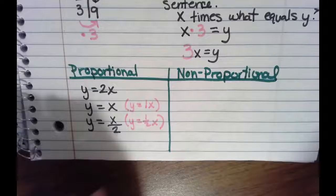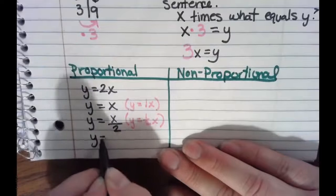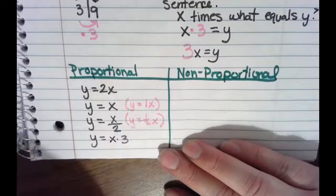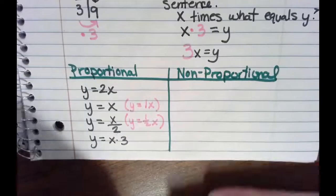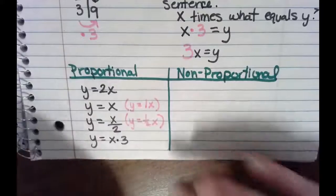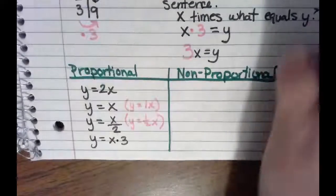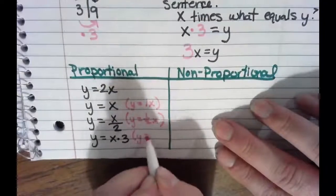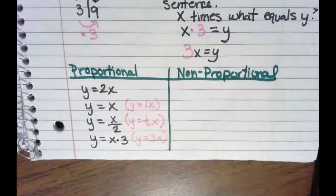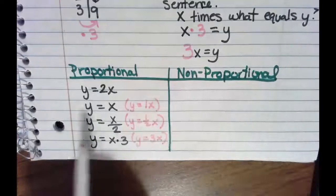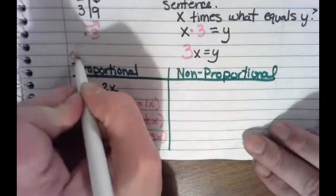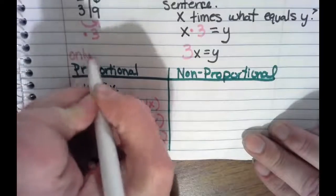Some people say, well, what if it's X times 3? Hypothetically that's still right, because we're still just multiplying — it's okay that the 3 is after. We still prefer it written with the number in front, but if it's written that way it's still the same thing, because it's still multiplication. We can only multiply.